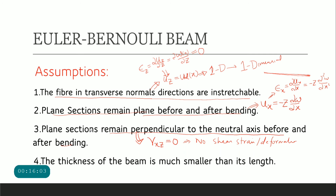The fourth assumption is that the thickness of the beam is much smaller than its length, which implies that L/h is much greater than 1, making this a slender beam theory.